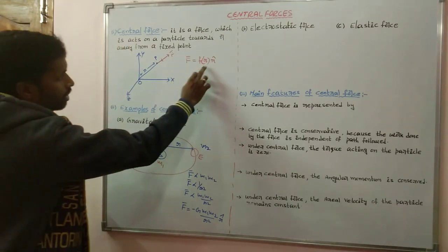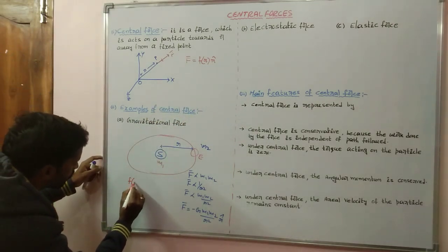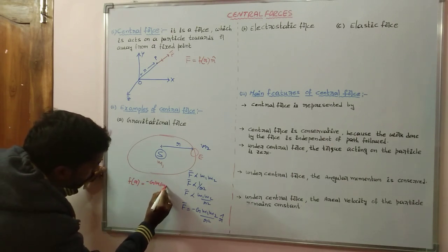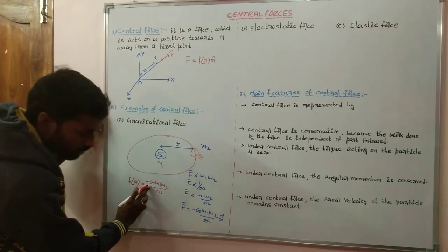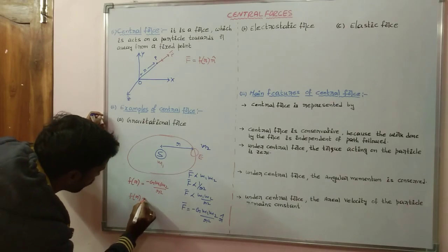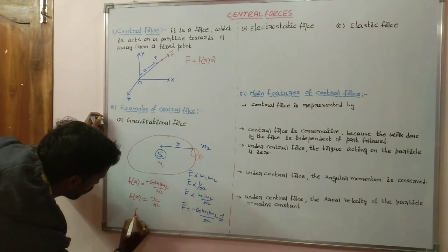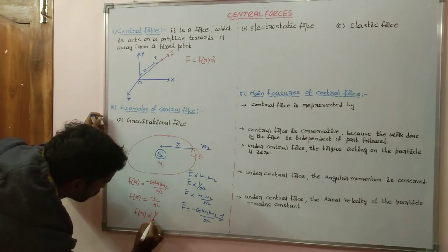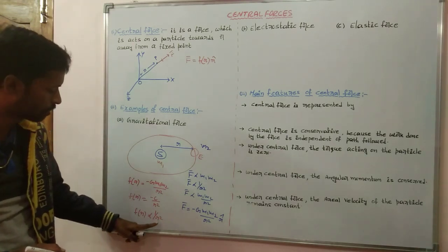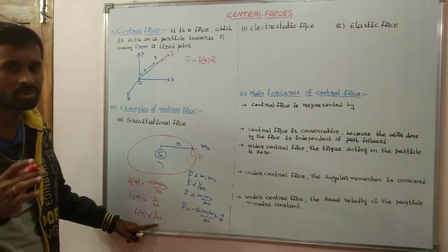Comparing this equation with F bar = f(r)·r-cap, we get f(r) = −G·m1·m2 / r². Since G, m1, and m2 are all constants, we can write f(r) = −C / r², where C is a constant. This means f(r) is directly proportional to 1/r², confirming that the magnitude of central force depends only on the function of r.